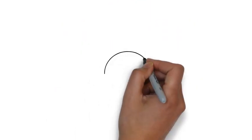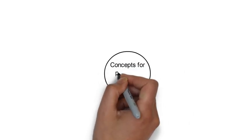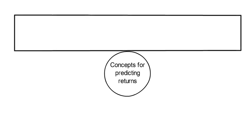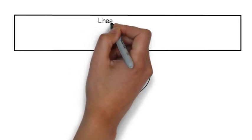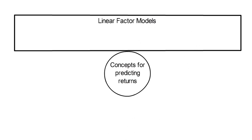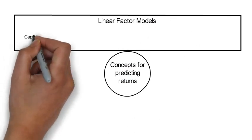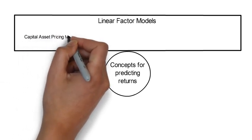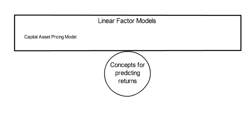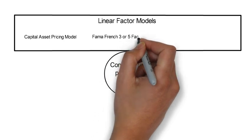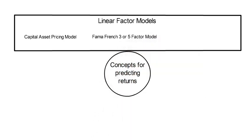Now second, in this course we are going to learn different concepts for how to predict returns. One class of models are linear factor models. I call these fundamental financial return predicting models. Well known examples are the capital asset pricing model, also called in short CAPM, or the Fama-French three-factor model, or the Fama-French five-factor model.